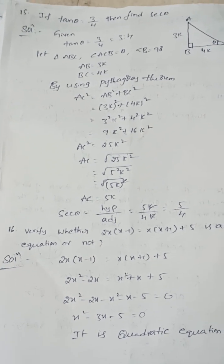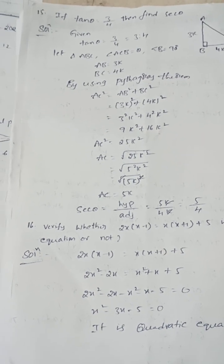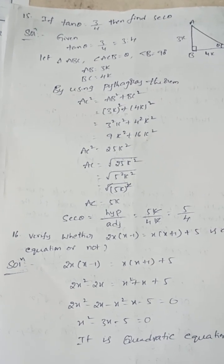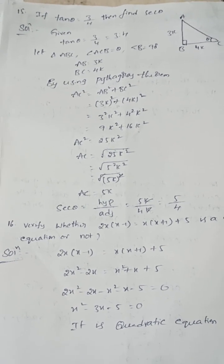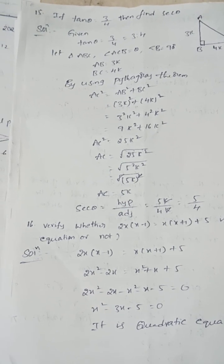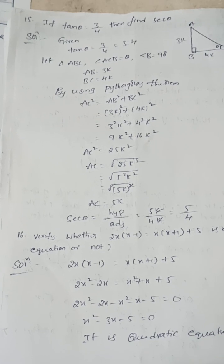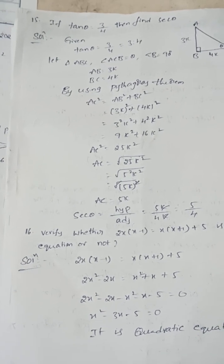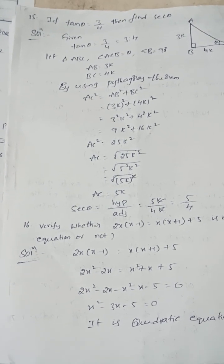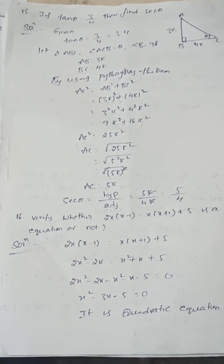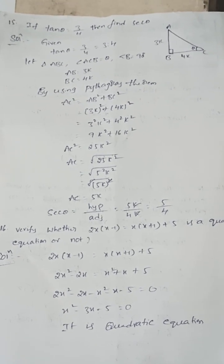If tanθ = 3/4, find secθ. tanθ = 3/4 means opposite is 3 parts and adjacent is 4 parts. In triangle ABC with angle B = 90°, AB = 3K, BC = 4K, so AC = 5K. Secant ratio at angle θ is hypotenuse by adjacent, that is 5K/4K, which equals 5/4.